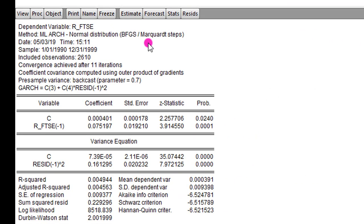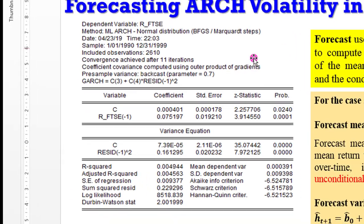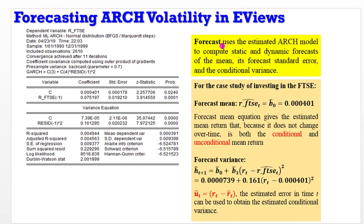So this is the output from the ARCH model that we have estimated. I'm going to show you how you can forecast the mean return of the stock and how you can compute the forecast for the variance. The forecast uses the estimated ARCH model to compute both static and dynamic forecasts of the mean, the standard error, and the conditional variance. The forecast mean in this case is beta naught, represented by the constant here: 0.000401.